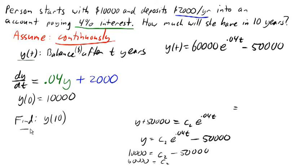We can evaluate y of 10 to figure out how much is left after 10 years. That'll be 60,000 times e to the 0.04 times 10 minus 50,000, which evaluates to approximately $39,509.48.